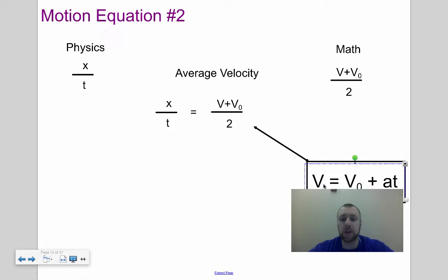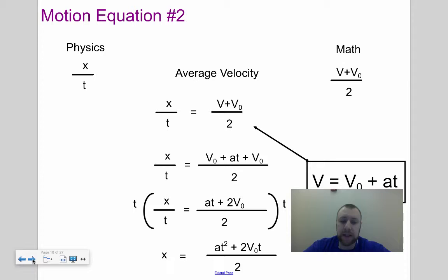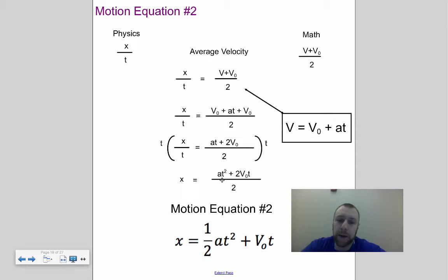We take our motion equation number one and plug it in for this V. All I did was I changed this V, and it became our initial velocity plus AT, and I kept my other initial velocity. Now I'm going to combine like terms. I'm trying to get my distance alone, so I multiply both sides by T, so I get x equals AT squared plus 2V naught T divided by 2. Now I simplify by dividing each one of these by 2, and I'm finding my motion equation number 2 as my distance: x equals 1 half AT squared plus initial velocity times T. These two equations are going to be used throughout our project.